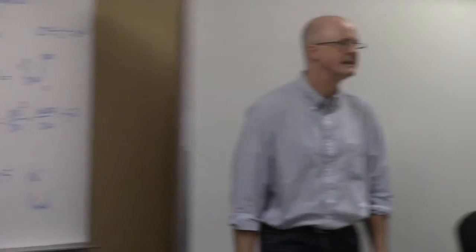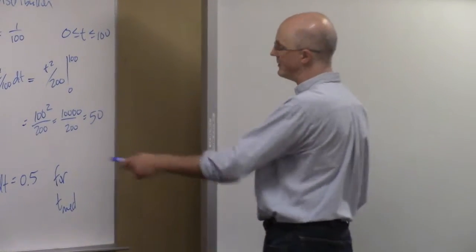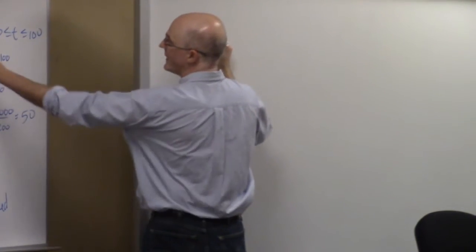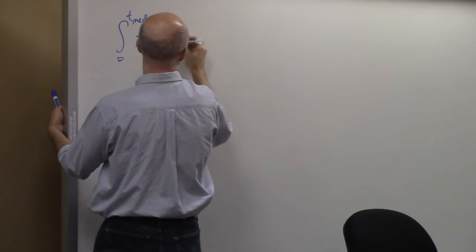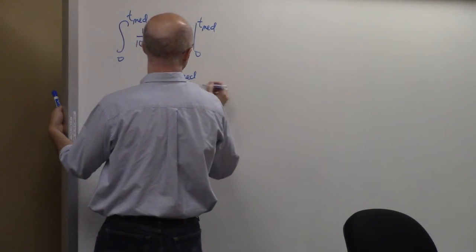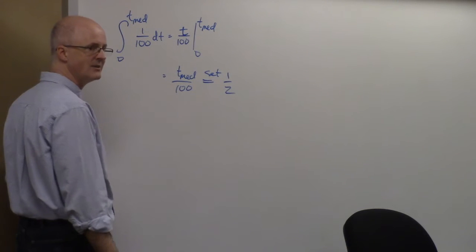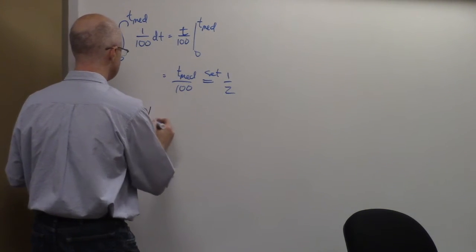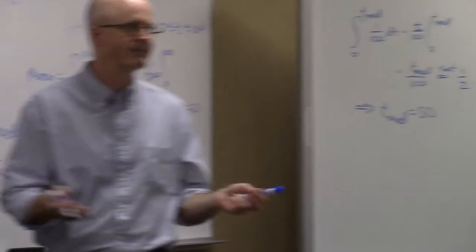For the uniform distribution, we integrate 1/100 from 0 to T_med. We get T_med/100 = 1/2, so multiplying both sides by 100, T_med equals 50. With the uniform distribution, both the mean and the median are the same, and they're both in the middle, which is expected because of the symmetry.